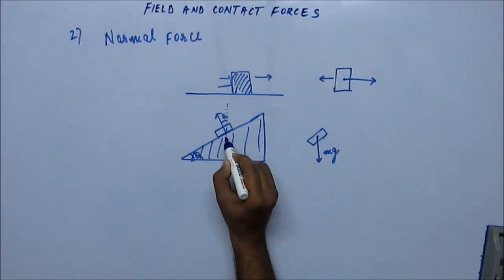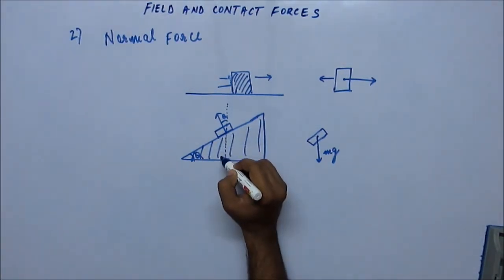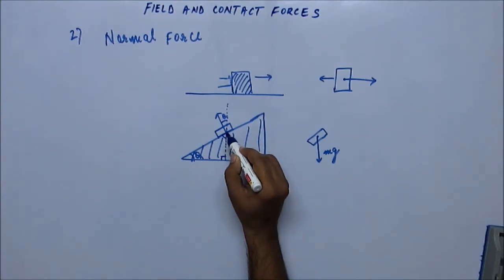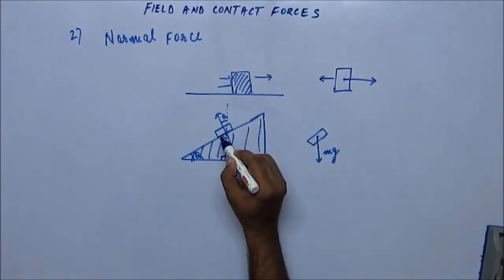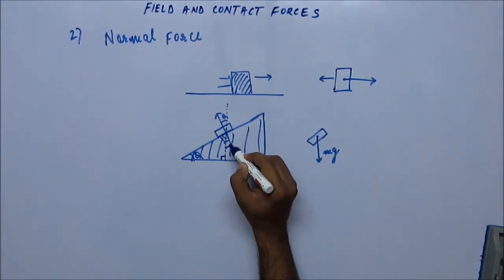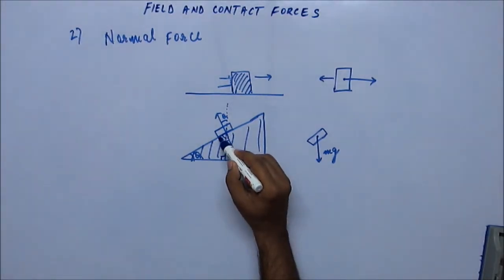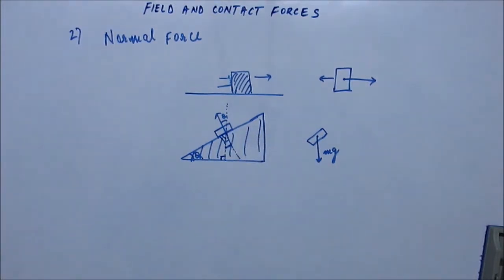This angle here is 90 degrees, and this is 90 minus theta. If we extend the line of the normal force backwards, this whole angle is 90 degrees because the normal is perpendicular to the surface. So this angle is theta, this is 90, this is 90 minus theta, this whole angle is 90, so this is theta again — a vertically opposite angle. Therefore, the angle which the normal makes with the vertical is theta.